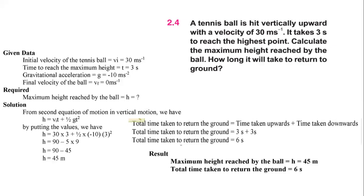From 45 meters, the velocity of the ball at the top is 0. We also need to calculate the total time for the ball to return to the ground. The total time is the time taken upwards plus the time taken downwards. By symmetry, the time downward equals the time upward, so total time = 3 + 3 = 6 seconds. Result: maximum height reached by the ball is 45 meters and the total time taken to return to the ground is 6 seconds.